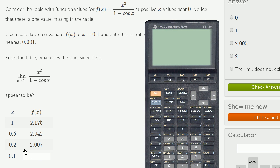And so let me evaluate it. So I'm going to have 0.1, 0.1 squared, divided by 1 minus cosine of 0.1.